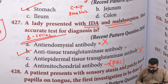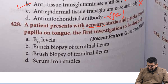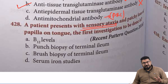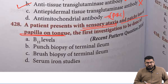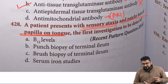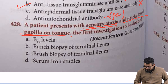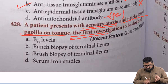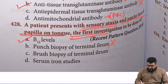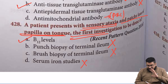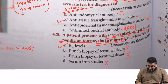A patient presents with sensory ataxia — a classical hint for neurological involvement — and patchy loss of papillae on the tongue (geographical tongue or fissured tongue). The first investigation to perform is serum B12 level measurement, since neurological involvement points to B12 deficiency. Punch biopsy of ileum, brush biopsy, and serum iron studies are not appropriate here, as iron deficiency rarely causes neurological impairment like sensory ataxia.